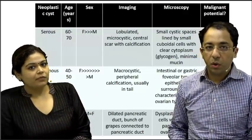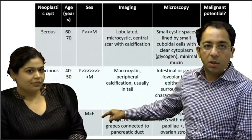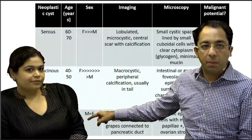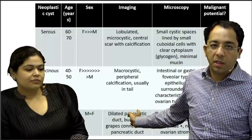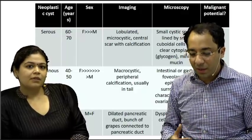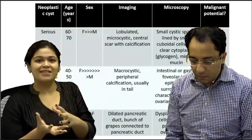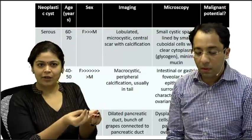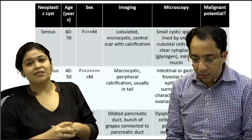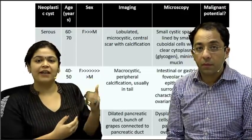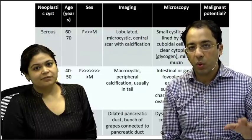Finally, for intraductal papillary mucinous neoplasms, the key point is that male-to-female ratio is almost equal — unlike the female predominance in serous and mucinous. The key radiological feature for IPMN is communication with the pancreatic duct, with a dilated duct and a bunch-of-grapes appearance. The tumor is intraductal, with architectural complexity — nice papillae — which is why it's called a papillary neoplasm. No ovarian stroma, mucin is present, and the tumor cells look more dysplastic. Malignant potential is definite.